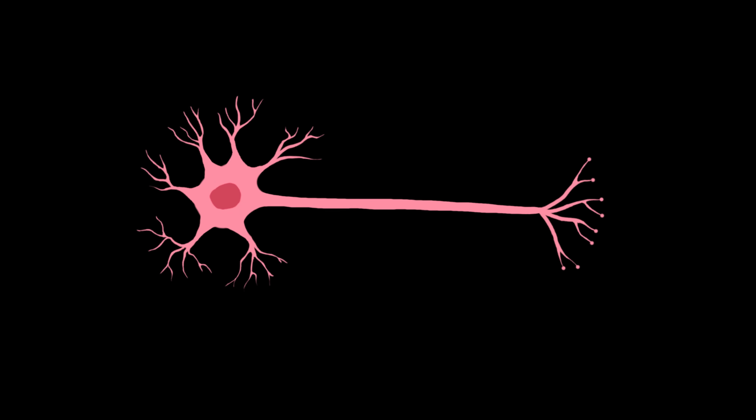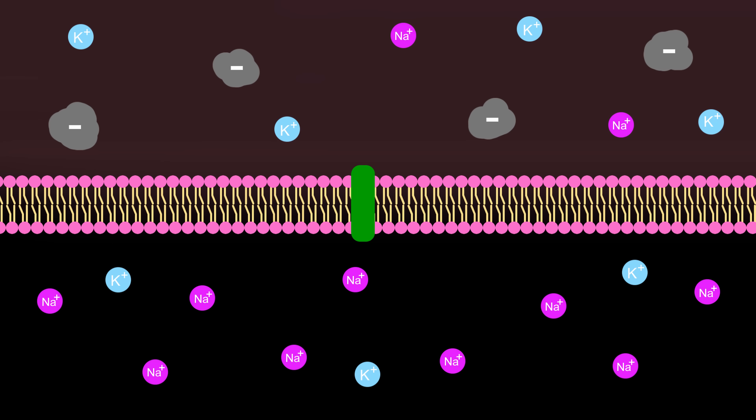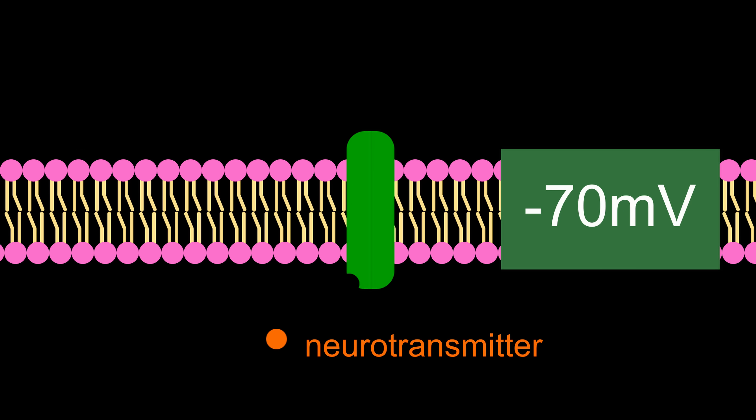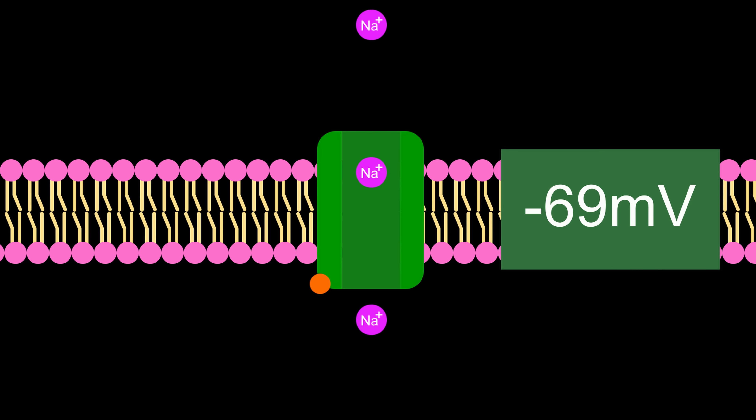When a neuron is just chilling, the axon is more negative on the inside than on the outside, because there's an unbalanced amount of ions. This causes an electric potential of about negative 70 millivolts. When there's a stimulus, signaling molecules called neurotransmitters dock onto ion channels on the axon and open them, letting ions flow and changing the electric potential around that area.